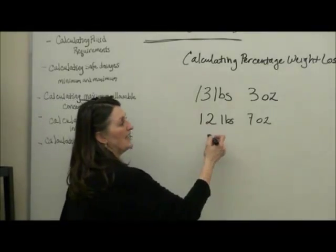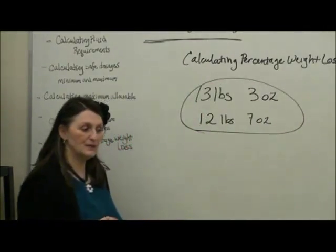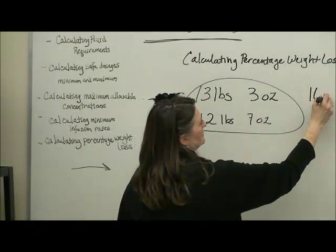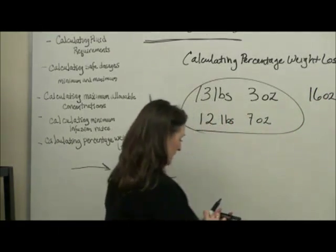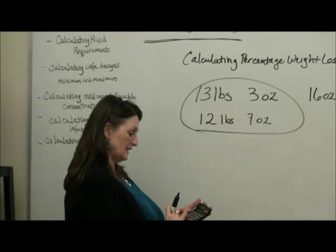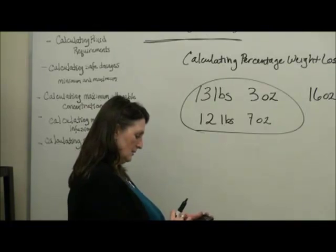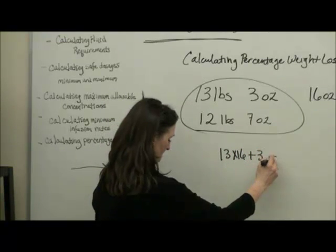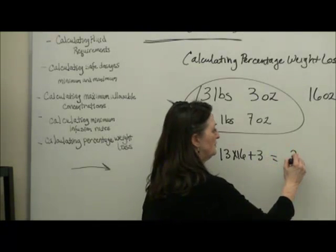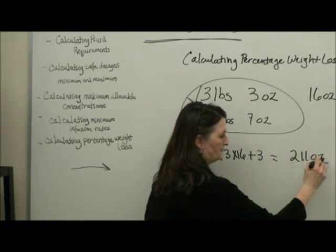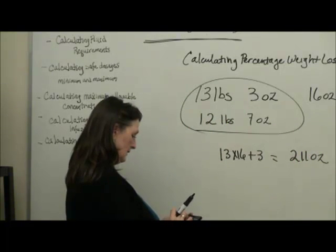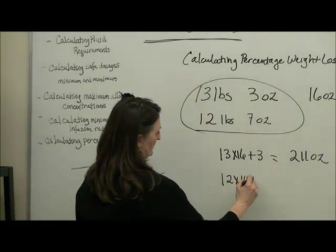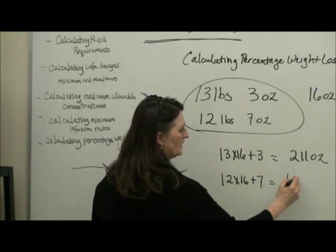The easiest thing to do is figure out how many ounces the child lost. We know there are 16 ounces in one pound. The child before he was sick weighed 13 times 16 plus 3, so he weighed 211 ounces. Now he weighs 12 times 16 plus 7, which is 199 ounces.